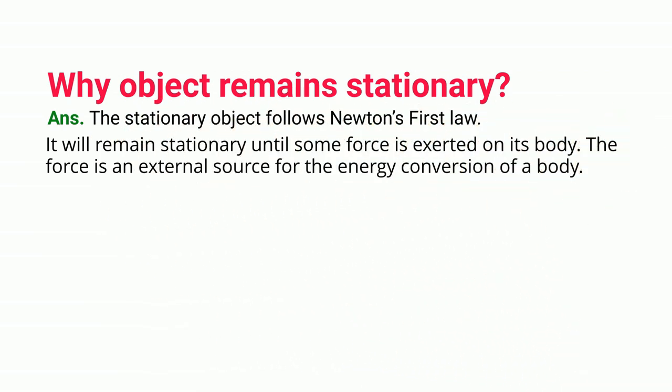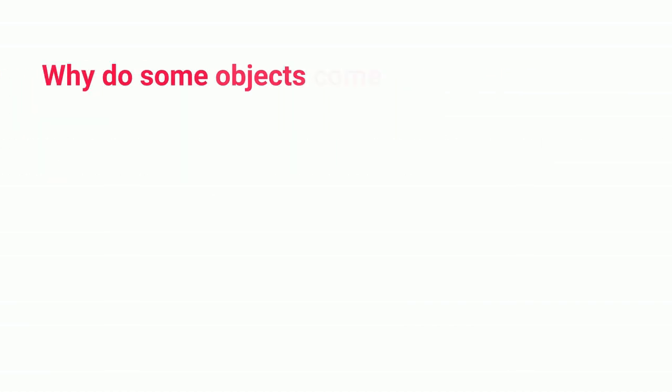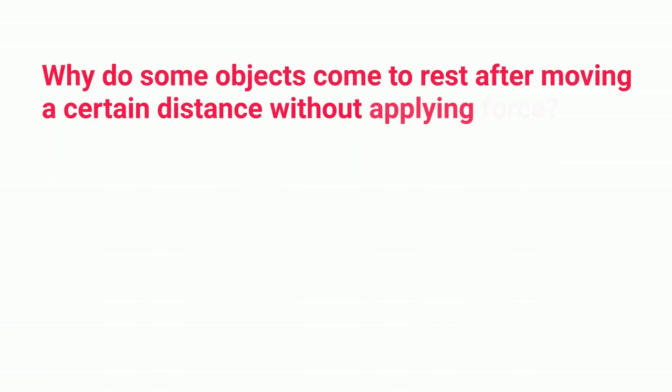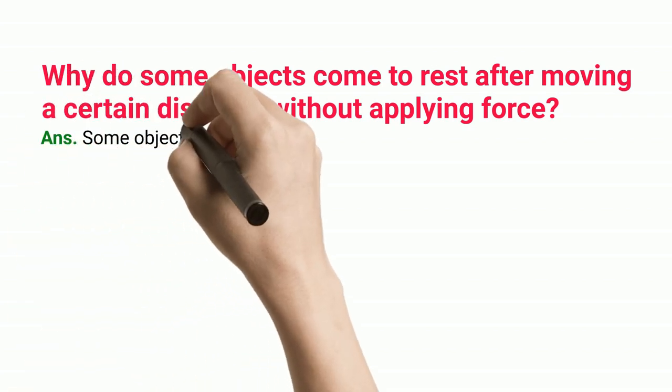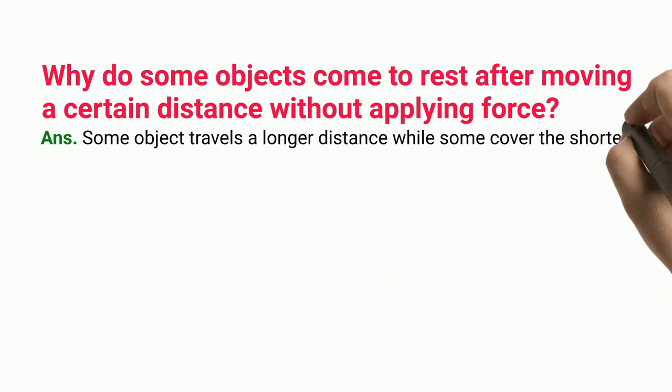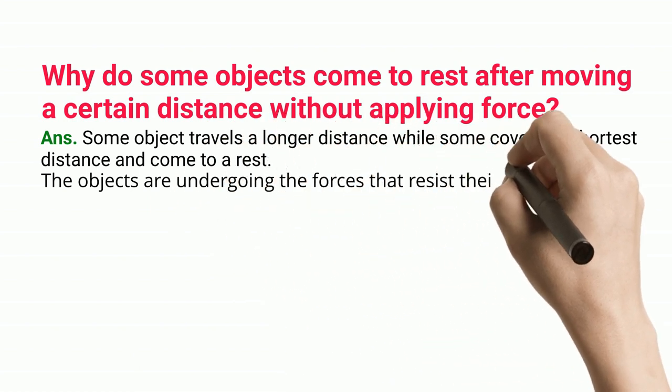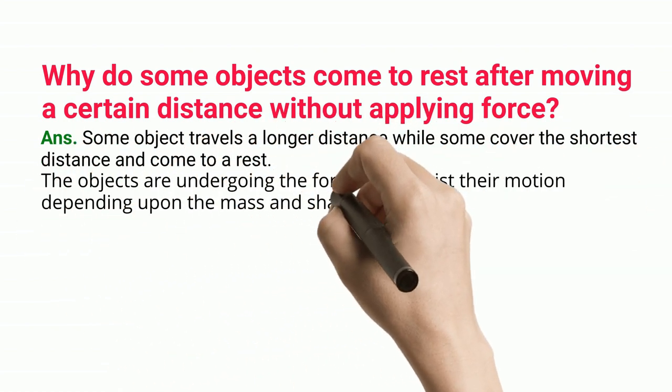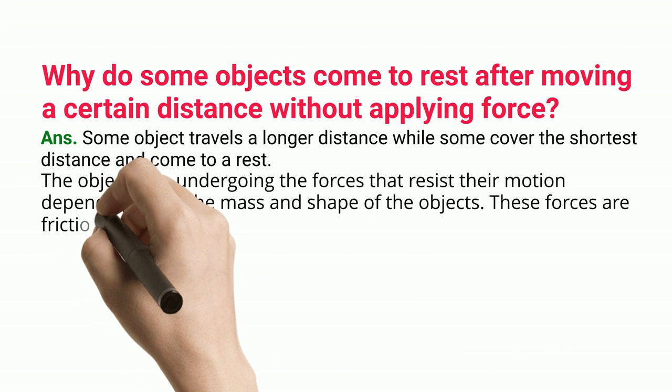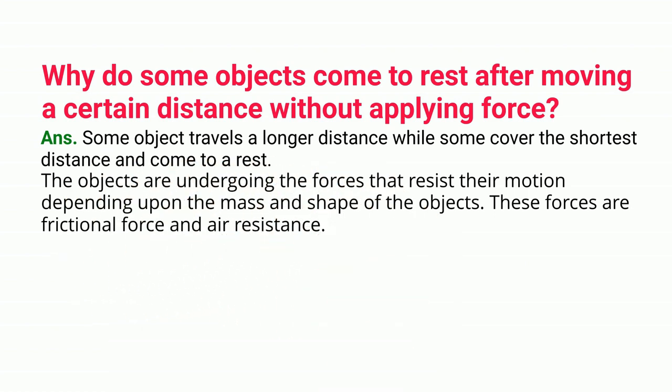Why do some objects come to rest after moving a certain distance without applying force? Some objects travel a longer distance while some cover the shortest distance and come to a rest. The objects are undergoing the forces that resist their motion, depending upon the mass and shape of the objects. These forces are frictional force and air resistance.